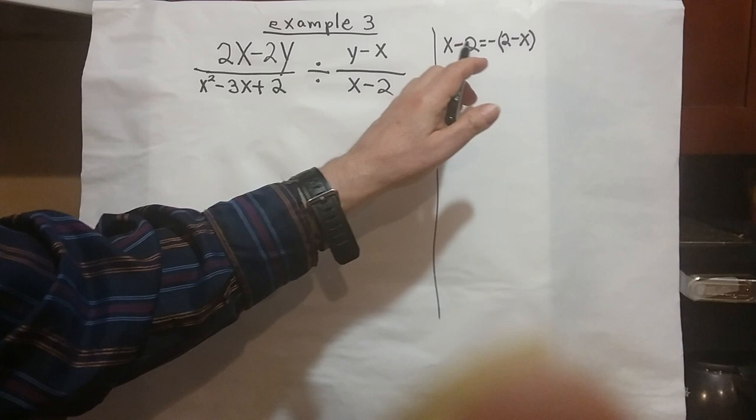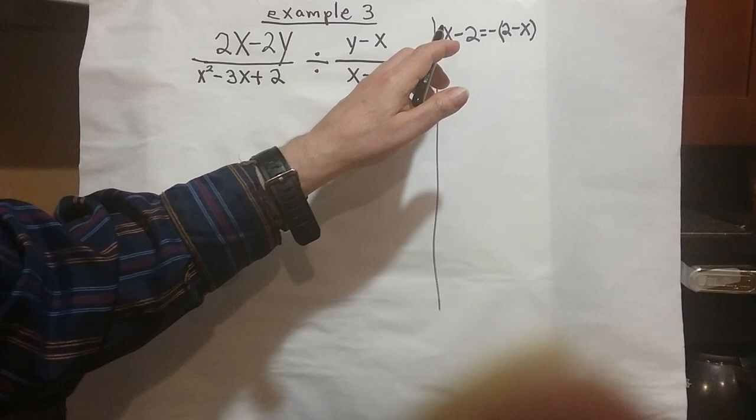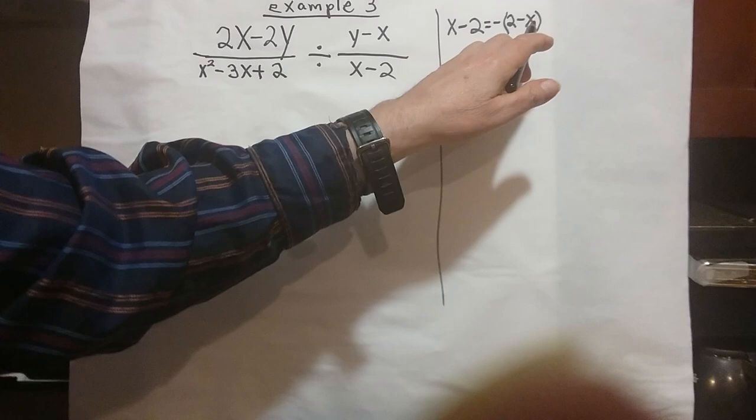You see this x minus 2 binomial, and over here you see 2 minus x, which is reverse, which is the reverse binomial of x minus 2. The x and the 2 switch places, and there's a negative in front.